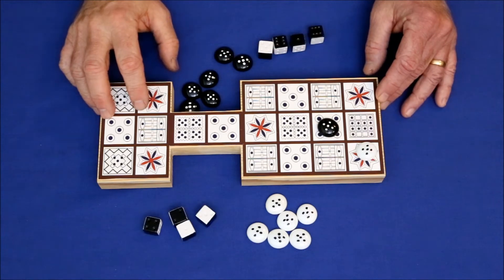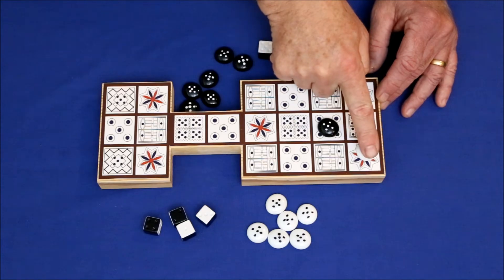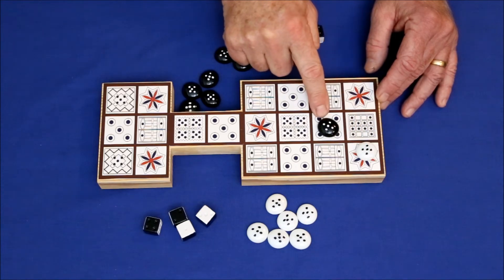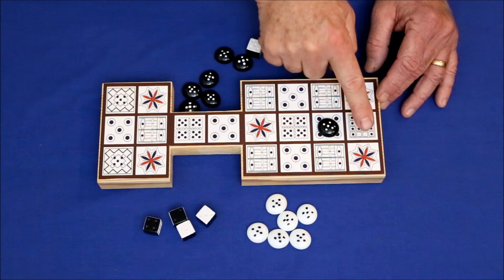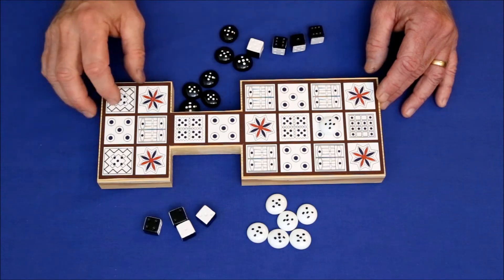Only one piece can occupy a square. If an opponent lands on a square with one of your pieces, for example he threw a two, one, two, he sends you home and you have to start over again.